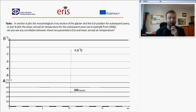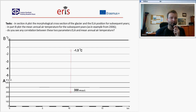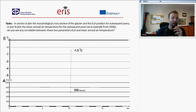In another task, you are asked to use the morphological cross-section of the glacier. In different years, you should add to the chart the mean annual air temperature and observe the equilibrium line altitude in different years, looking for any correlation between ELA and mean annual air temperature.